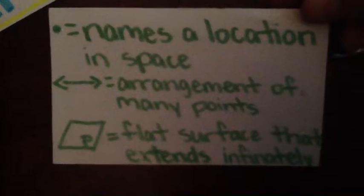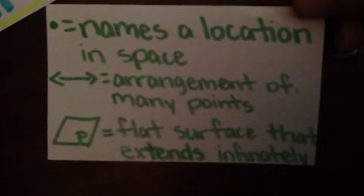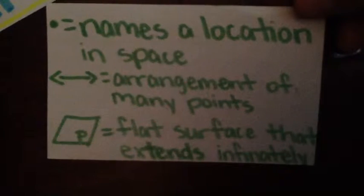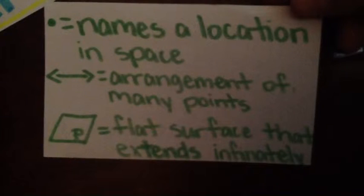Let's start with some basic definitions. A point names a location in space. A line is an arrangement of infinitely many points, and a plane is a flat surface that extends infinitely. Now I know what y'all are thinking, how fun.